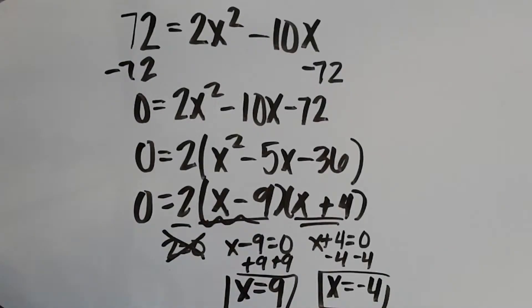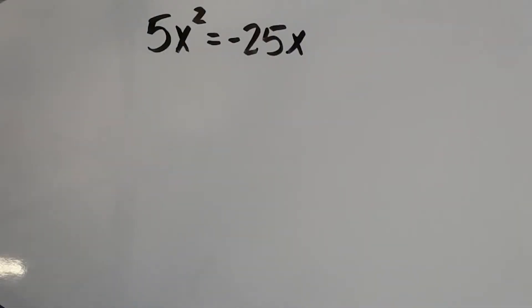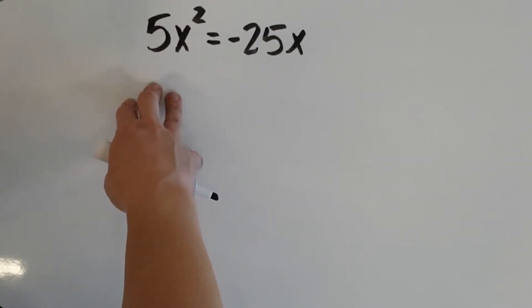Let's do one last example. So, in this last example, we have 5x squared equals negative 25x. Step 1 always says get our equation equal to 0. Well, I could either subtract 5x squared over to the right side, or I could add 25x to both sides to move it over here. Again, I like my a value to always be positive. So, I'm going to keep it where it is so that it stays positive.